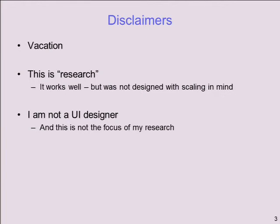I'll start with disclaimers. After I finished my PhD, I went on an extended vacation followed by another not-quite-so-extended vacation, so there are a whole bunch of details that have fallen out of my head. That's my pre-existing excuse for some questions I'll know I did know the answers to but no longer do. The application, Data Near Here, was written as research. When we started it, pretty much everybody thought I was crazy and that it couldn't be done, so I wasn't particularly worried about scaling. Then it worked really well, so now we're worried about scaling something that wasn't designed with that in mind. I'm not a UI designer and it's not the focus of my research — the thing is ugly, and I'm a back-end person.